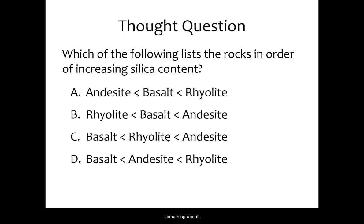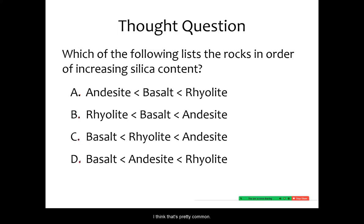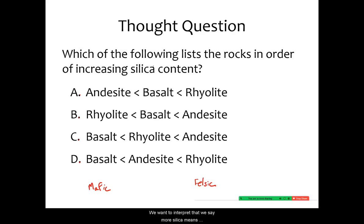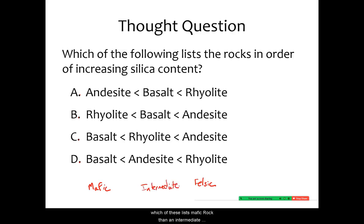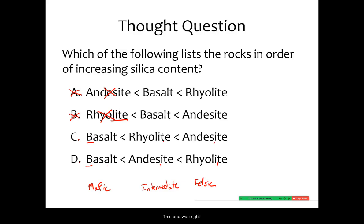Let's try to interpret something about these rocks. Which of the following lists the rocks in order of increasing silica content? We're looking for something that goes from mafic to felsic, since increasing silica content means more felsic, less silica means mafic — and intermediate is in between. So which lists a mafic rock, then an intermediate rock, then a felsic rock? Basalt — the black rock — is mafic. Rhyolite — light in color — is felsic. Andesite is the intermediate one. So the correct order is basalt, andesite, rhyolite.